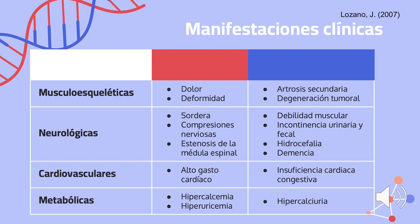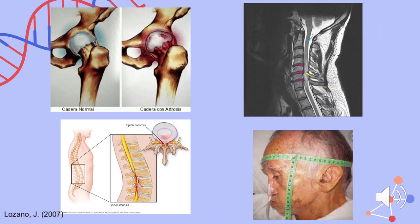En las manifestaciones metabólicas se comprende hipercalemia, que es un nivel alto de potasio en la sangre, hiperuricemia, que es un alto nivel de ácido úrico en la sangre, e hipercalciuria, que es excretar más calcio de lo normal a través de la orina. En la primera imagen podemos observar una artritis secundaria; en la segunda imagen se aprecia la estenosis de la médula espinal; en la imagen inferior izquierda se observa una compresión nerviosa; y en la imagen inferior derecha podemos observar a un paciente con hidrocefalia.